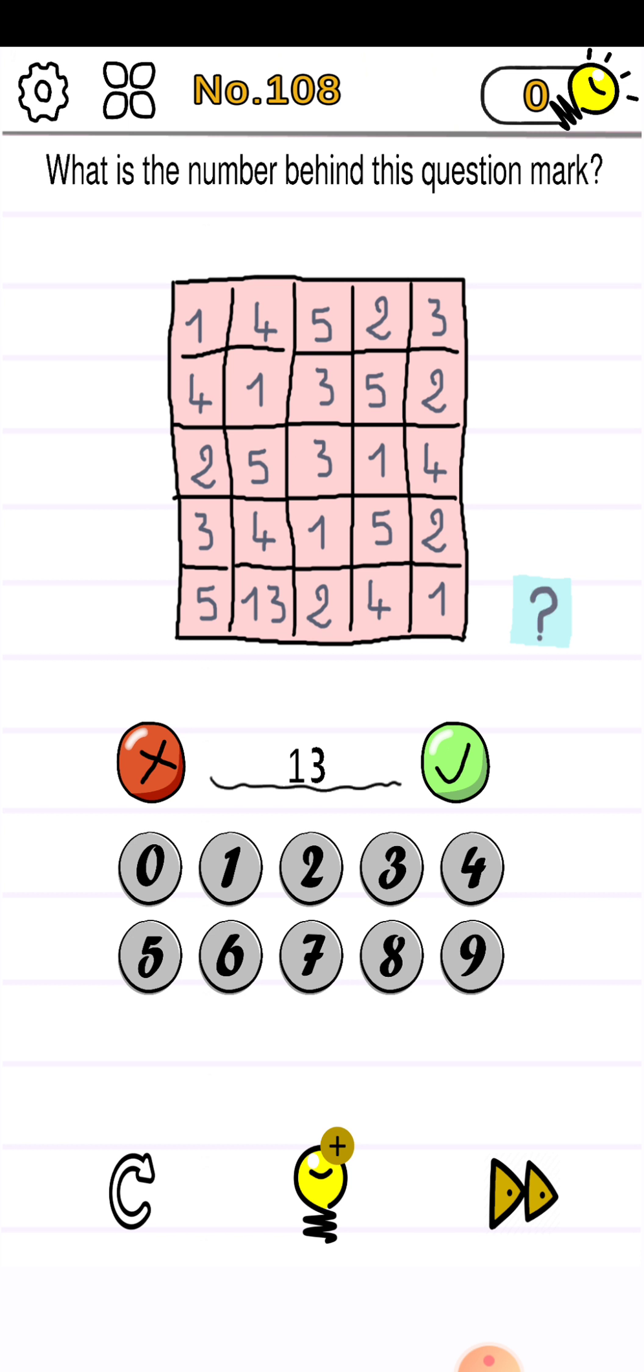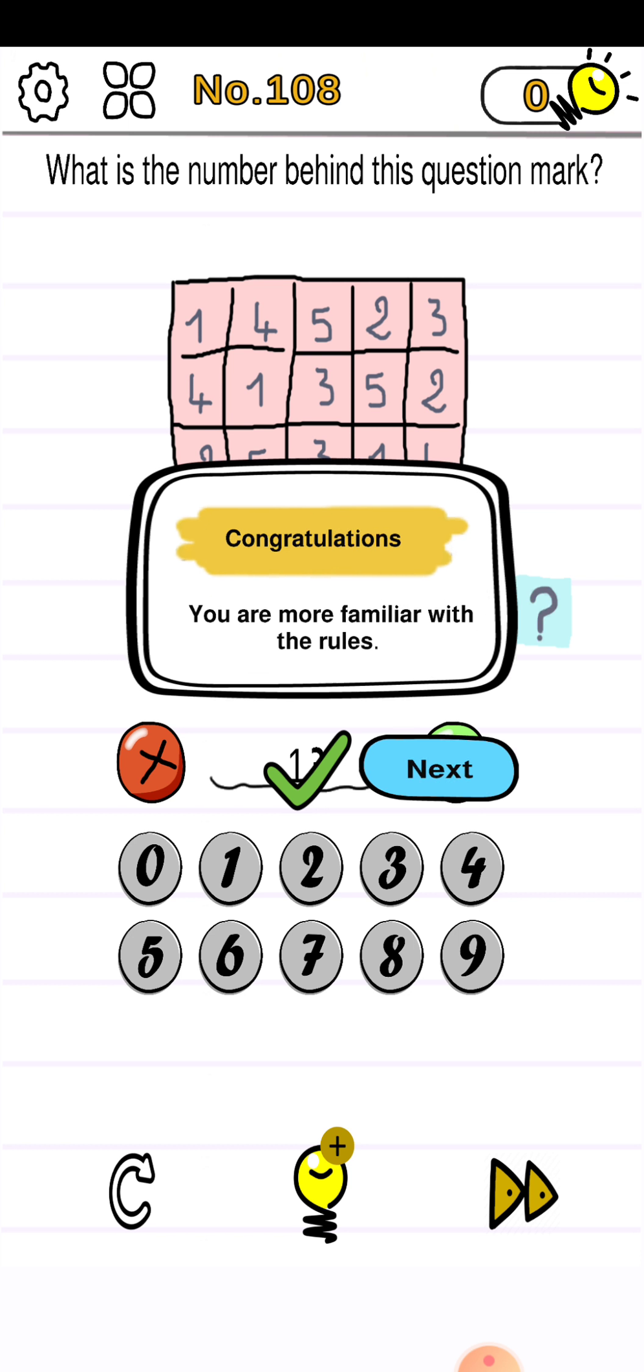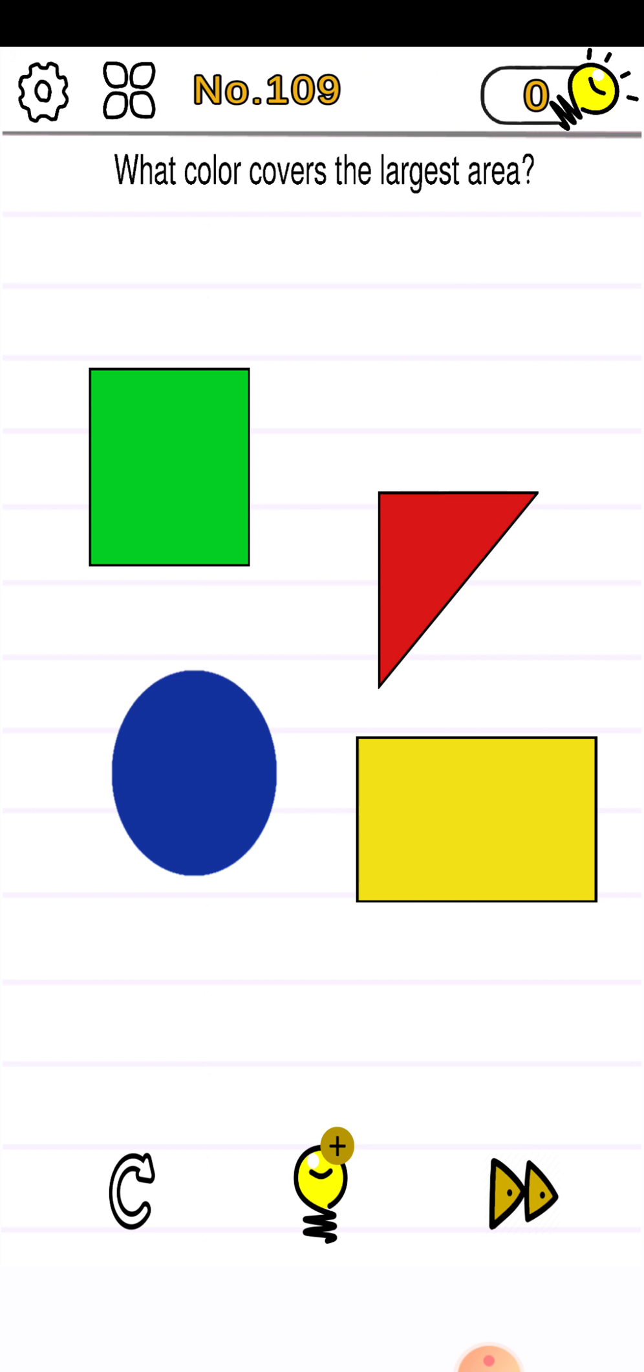Let's proceed to level 109. What color covers the largest area? So the white color covers the largest area. So just press your finger on the white color right here and the level would be cleared.